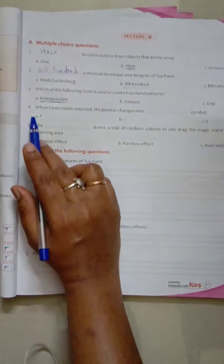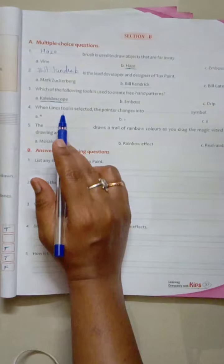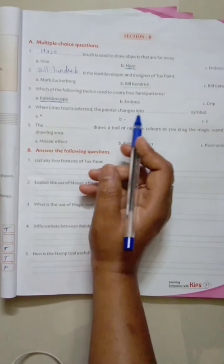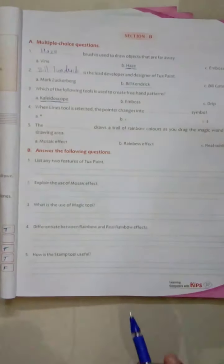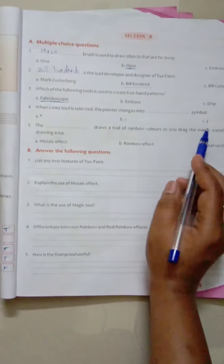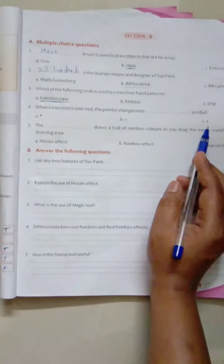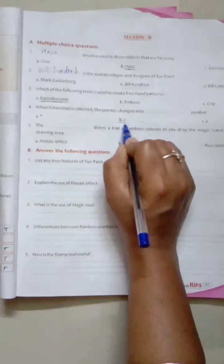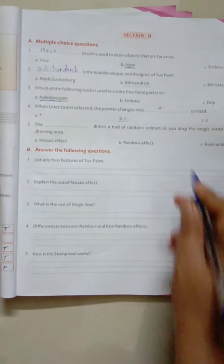Now let me read the fourth one. When line tool is selected, the pointer changes into dash symbol. Whether it is star, whether it is plus, or dollar sign. So the right answer is B.